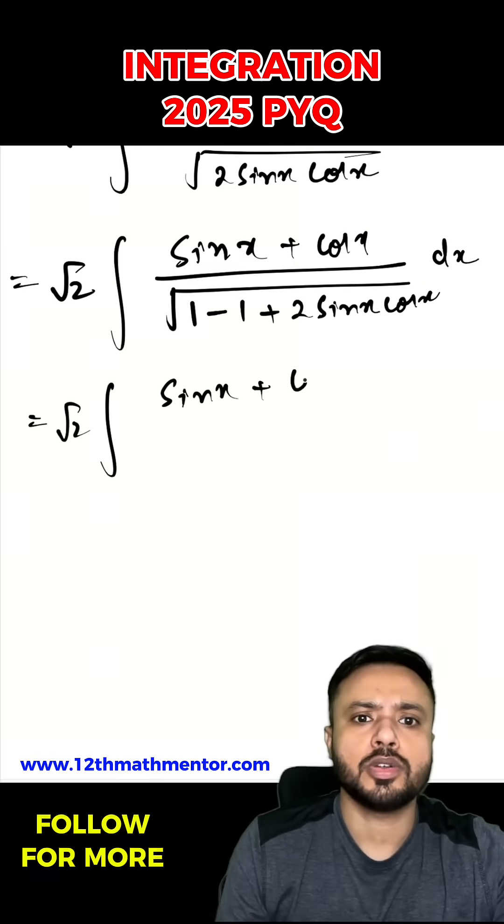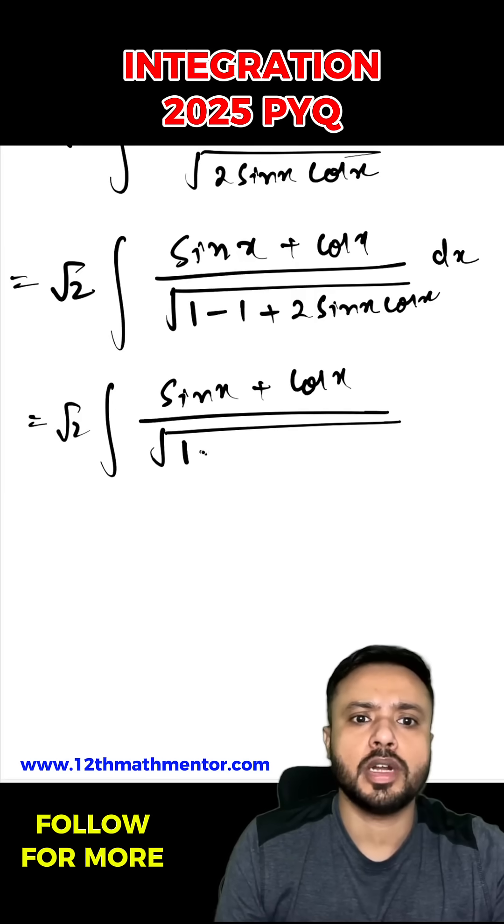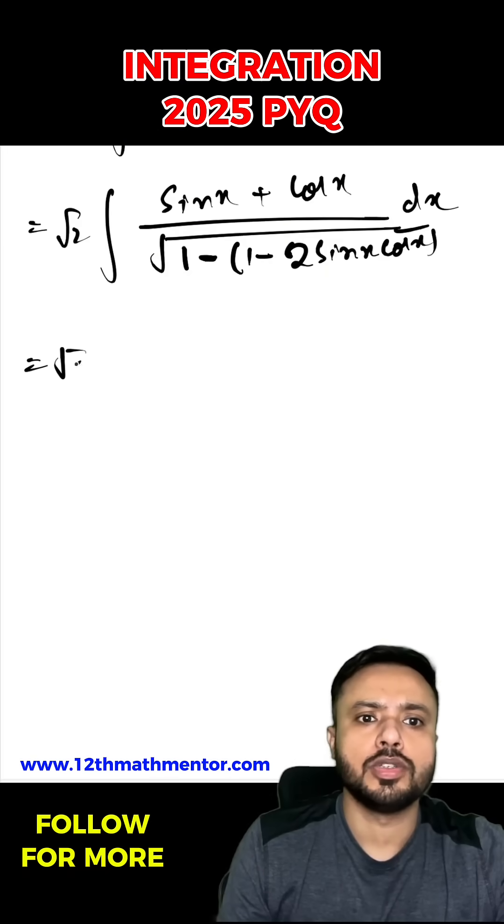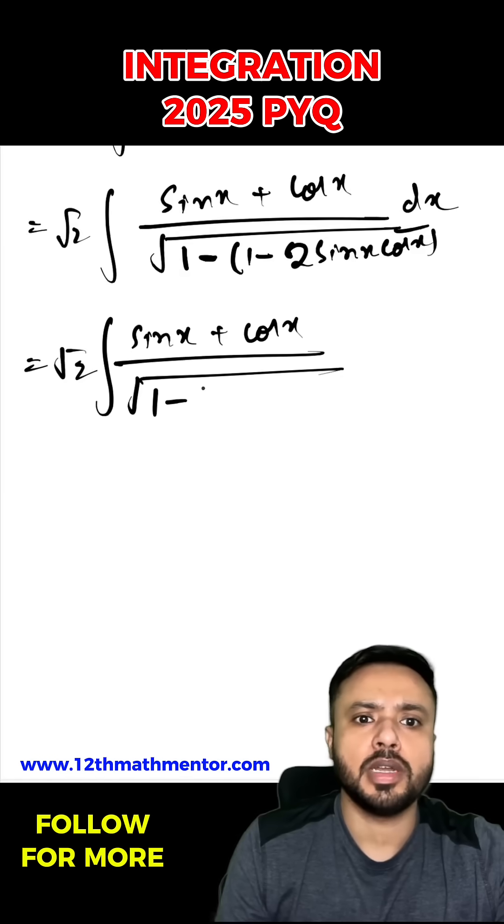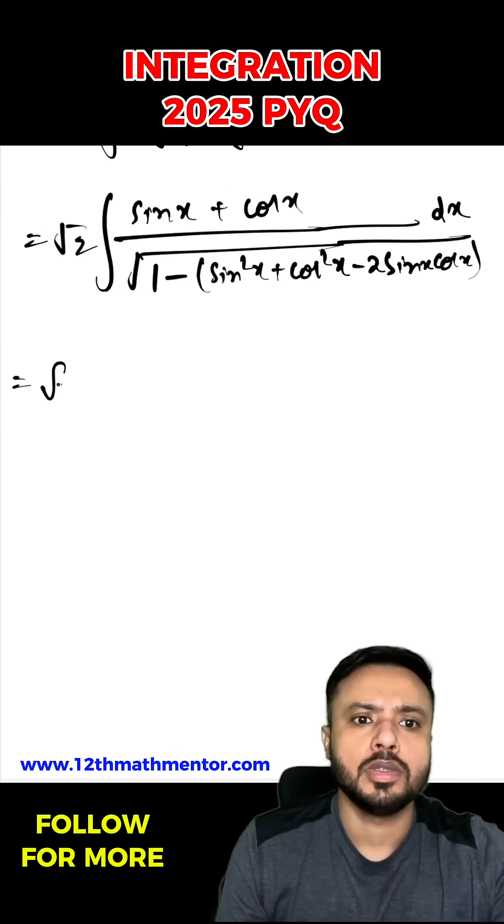So root 2 integral of sine x plus cos x upon root of, I can write as 1 minus brackets 1 minus 2 sine x cos x dx, which is root 2 integral of sine x plus cos x by root of 1 minus sine square x plus cos square x minus 2 sine x cos x dx.